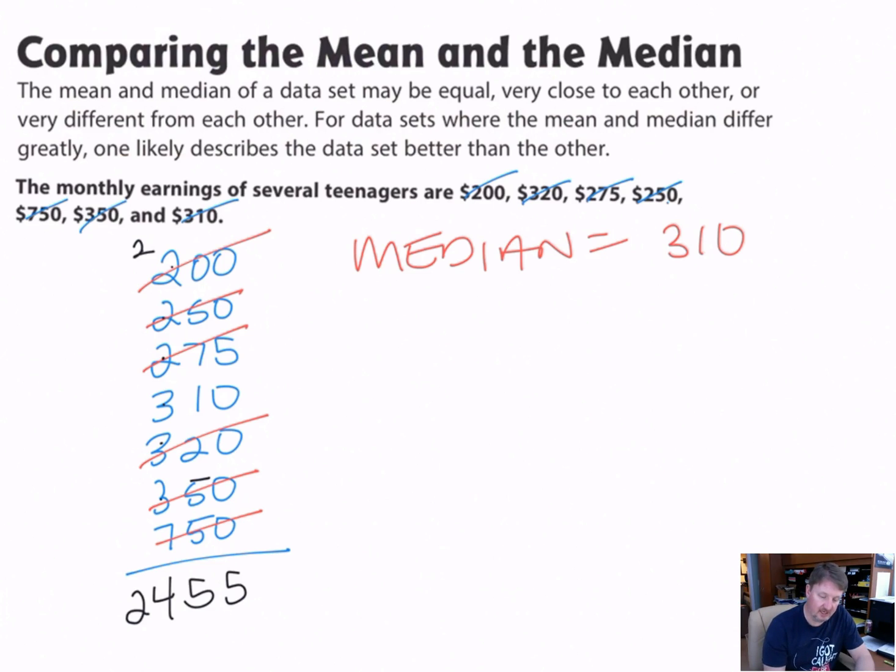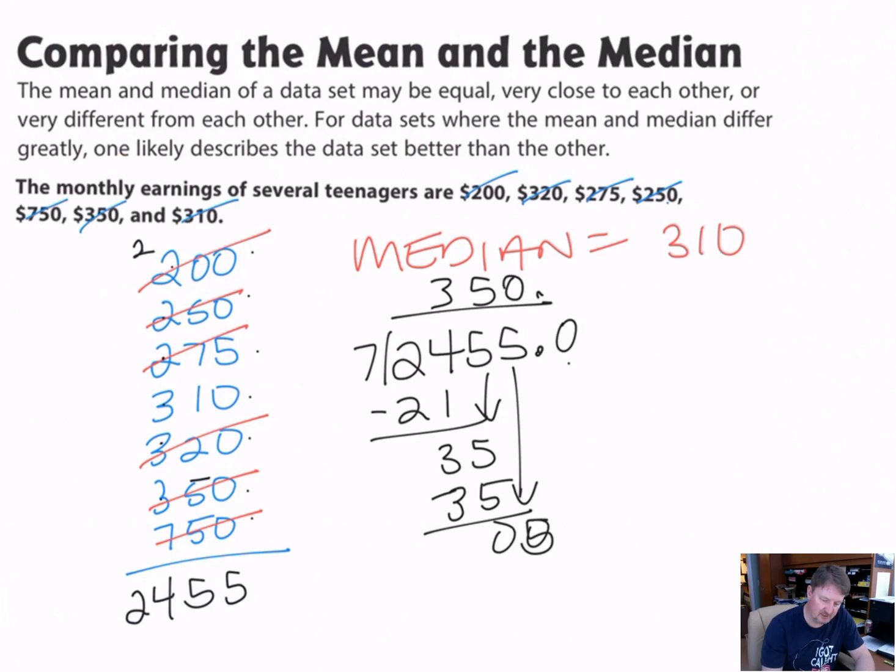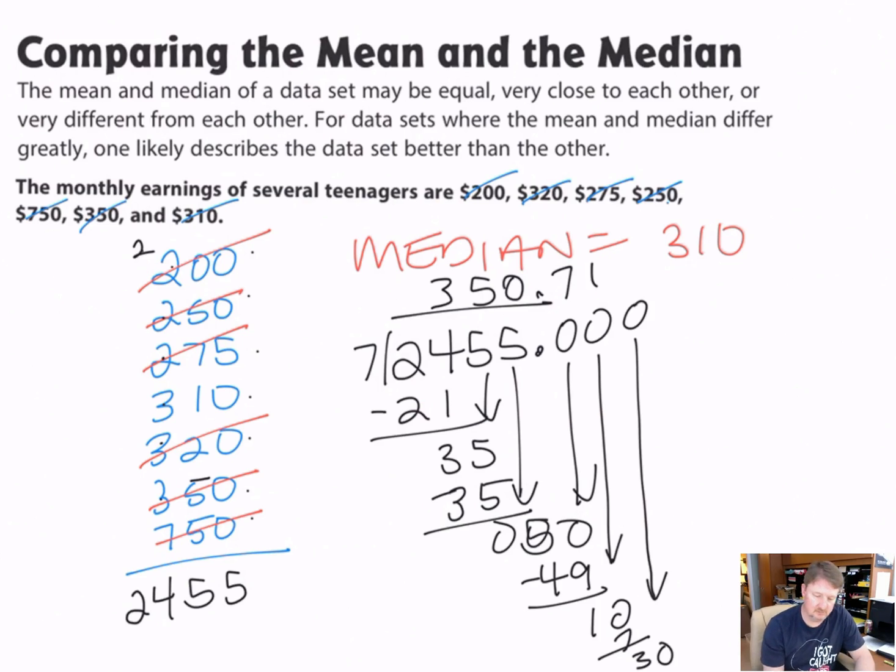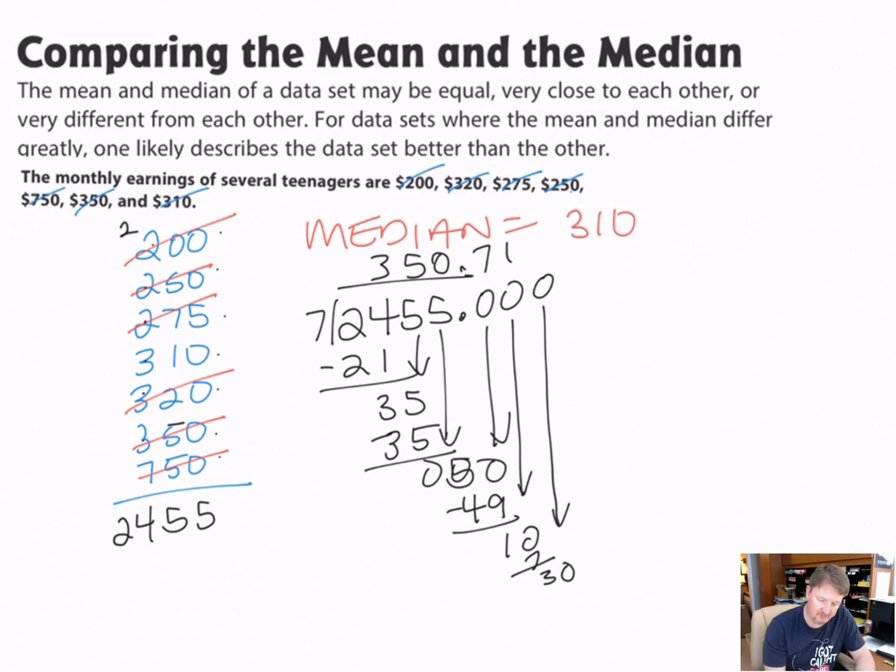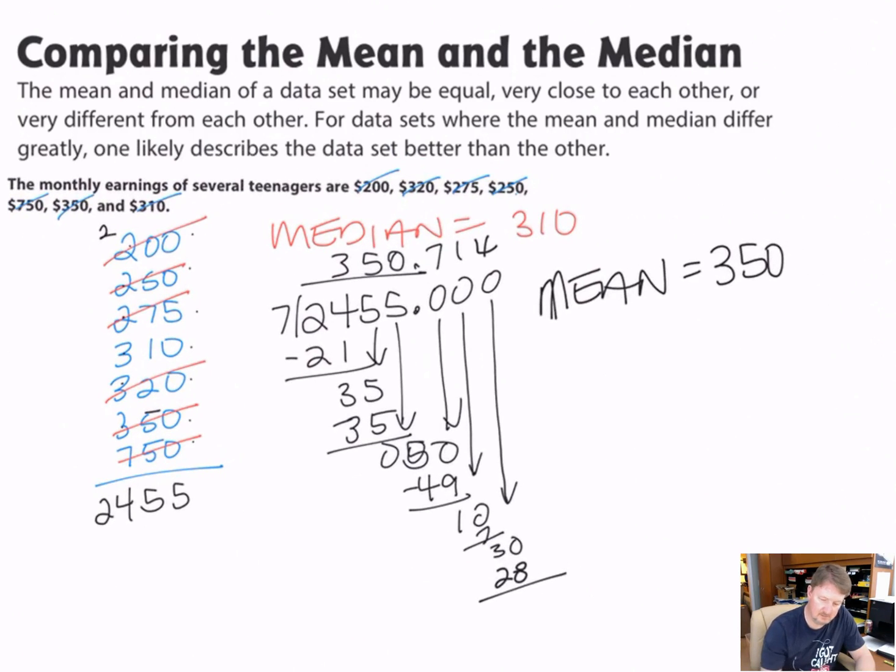But let's go ahead and add this up to find the mean. Here I'm just adding my numbers up and getting my grand total: 2,455. But I have to divide by how many pieces of data we have—one, two, three, four, five, six, seven pieces of data. So I'm going to divide 2,455 by 7.